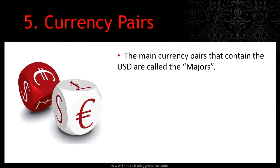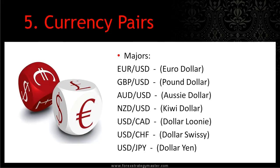The main currency pairs that contain the USD are called the majors. When traders talk about trading the majors, these are the currency pairs they're referring to: the Euro/US dollar, the Pound/US dollar, the Australian dollar/US dollar, and the New Zealand dollar/US dollar.